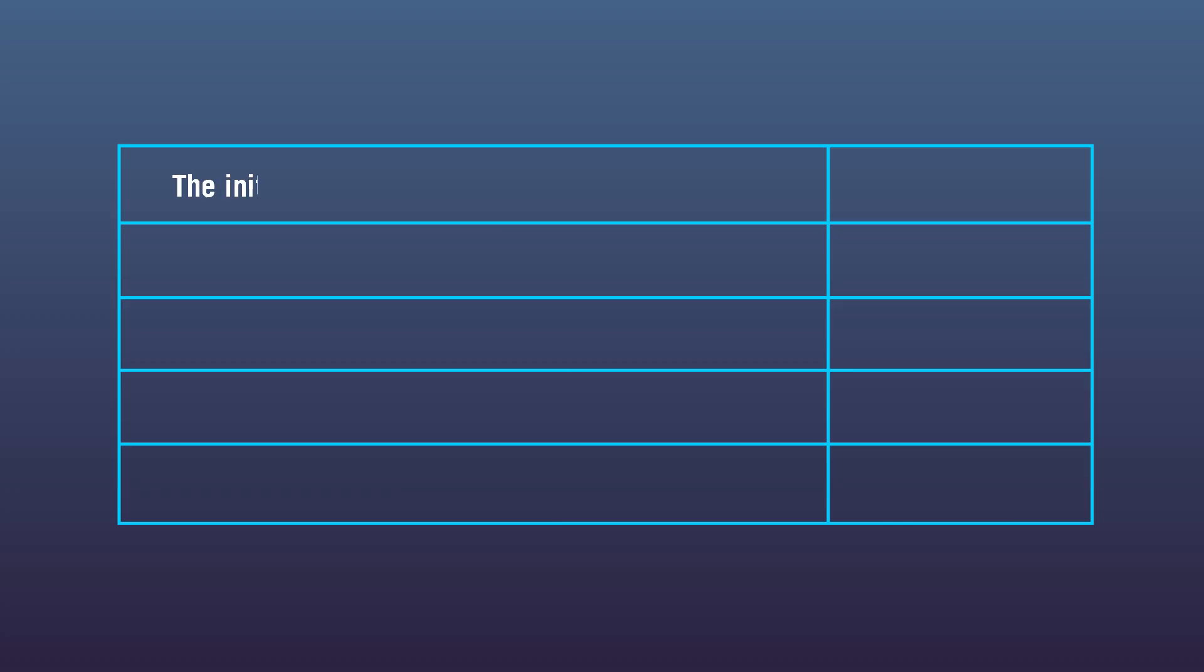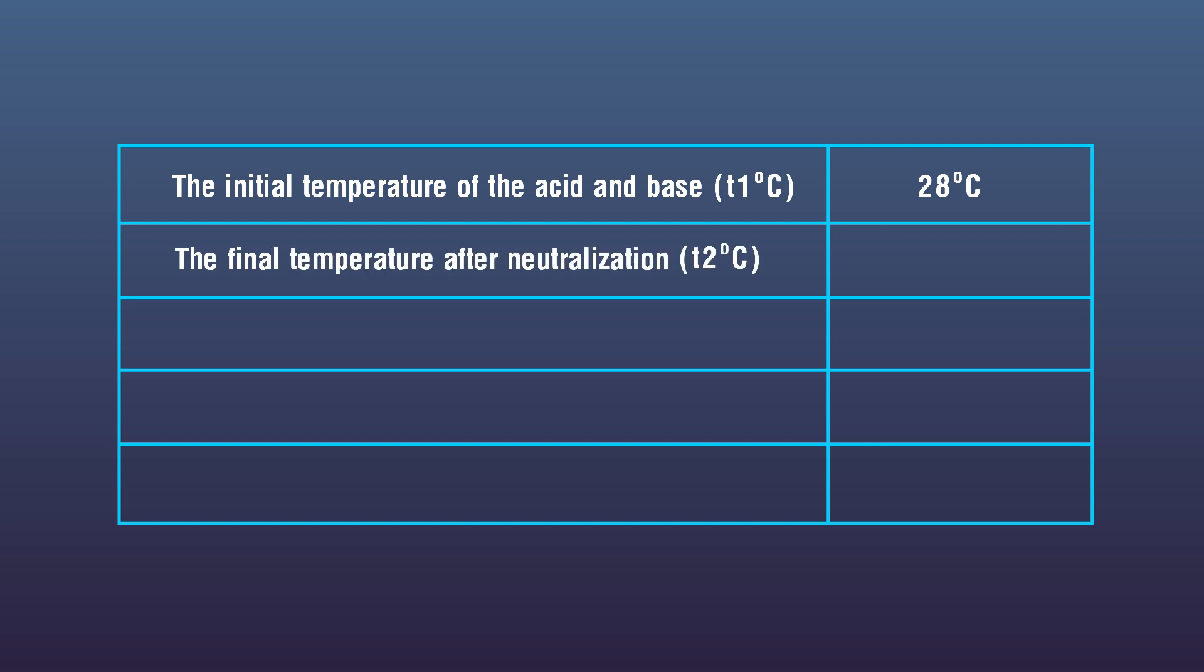Observation: The initial temperature of the acid and base T1 degrees Celsius. The final temperature after neutralization T2 degrees Celsius equals 40 degrees Celsius. Change in temperature delta T equals T1 minus T2 degrees Celsius. Mass of the mixture solution after neutralization is 200 grams.